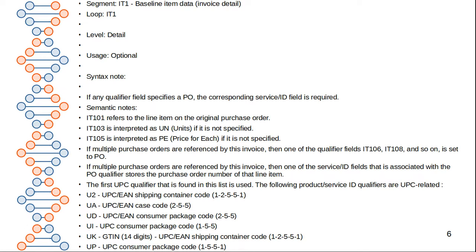The IT1 segment is baseline item data, also called invoice details. The loop IT1 is labeled with user indication options. Segment notes: IT101 refers to the line item on the original purchase order; IT103 is interpreted as U1 units if not specified; IT105 is interpreted as PE (price of each) if not specified. If multiple purchase orders are referenced by the invoice, then one of the qualifier fields IT106, IT108, and so on is set to PO.